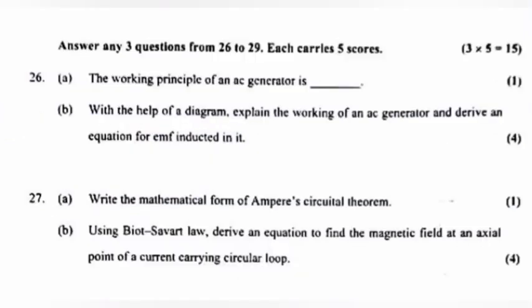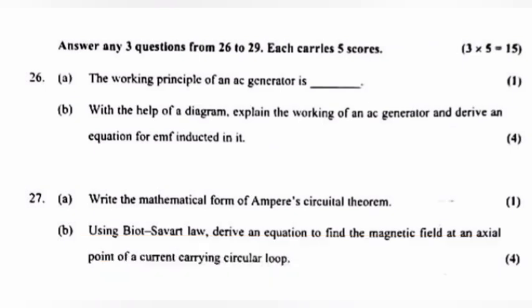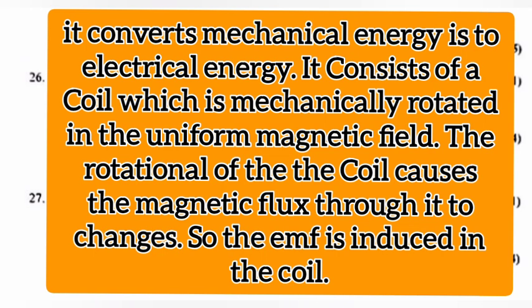Question 26a: The working principle of an AC generator is electromagnetic induction. Question 26b: With the help of a diagram, explain the working of an AC generator and derive an equation for the EMF induced in it. Answer: It converts mechanical energy to electrical energy. It consists of a coil mechanically rotated in a uniform magnetic field. The rotation causes the magnetic flux to change, so an EMF is induced in the coil.